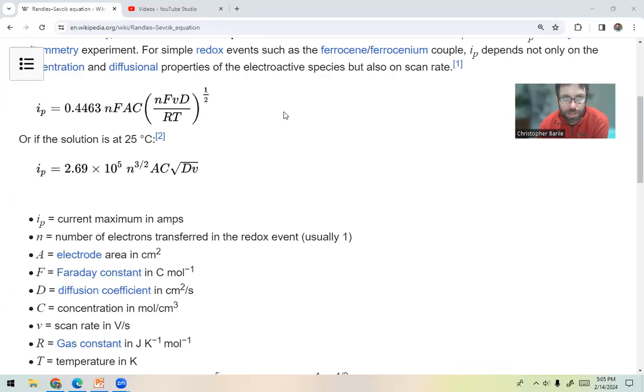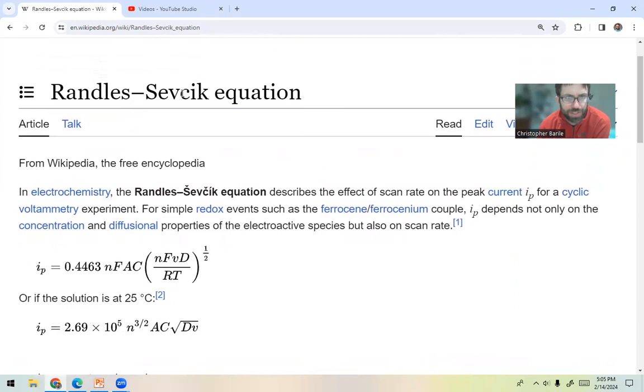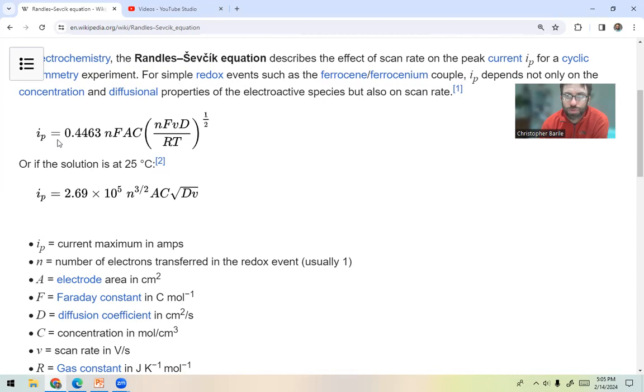Alright, so in this video we're going to go over one of these pretty important equations in electrochemistry, which is called the Randles-Sevcik equation. And what this equation tells you is the relationship between the peak current of a reversible redox couple. A classic example is ferrocene, ferricenium.